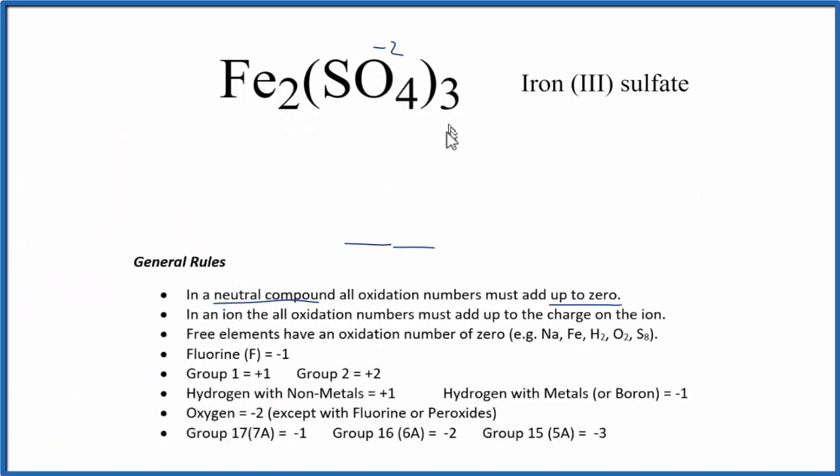Now we know that 3 times minus 2 equals minus 6. The iron will have to be plus 6 to cancel that out and give us a net charge of 0. So 2 times something gives us plus 6 - that's 2 times plus 3. These numbers cancel out, we have a neutral compound, and everything adds up to 0.